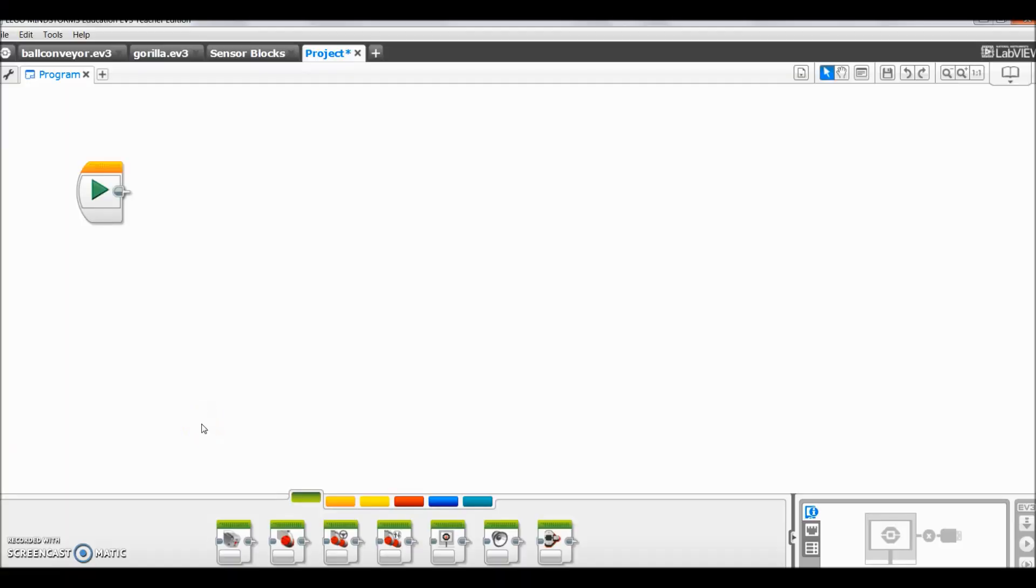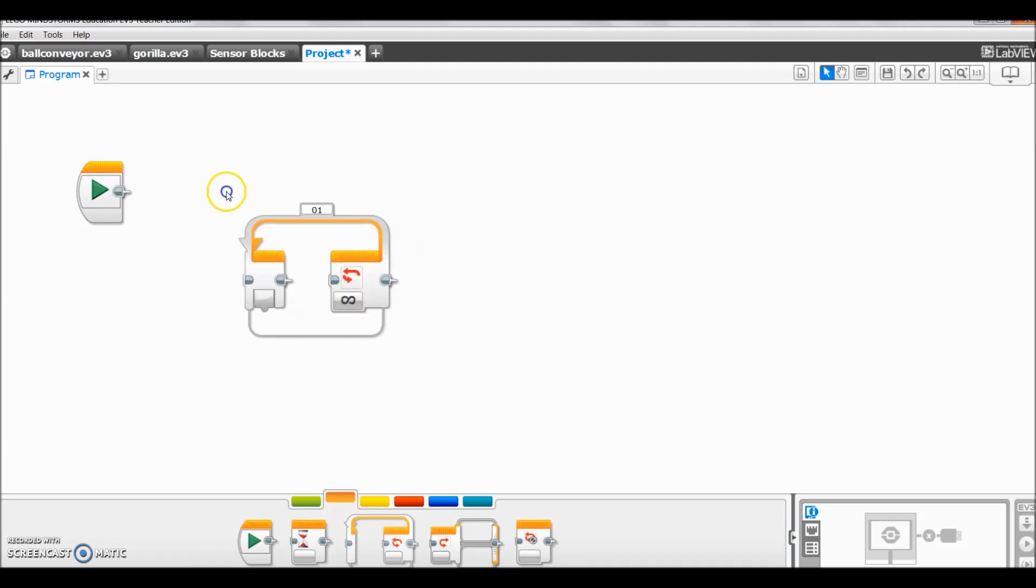Okay, everybody. I'm on my Lego Mindstorm software here. And the program is so incredibly easy. Let's get straight to it. The first thing you're going to want to do is go to your orange tab here, your flow control tab. And you're going to bring up a loop block.